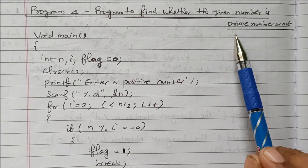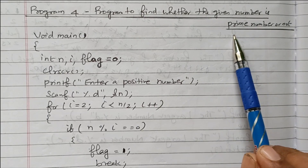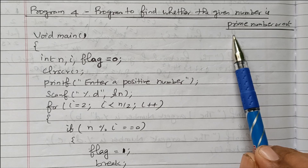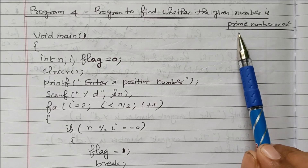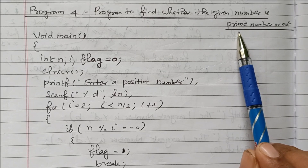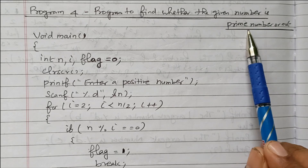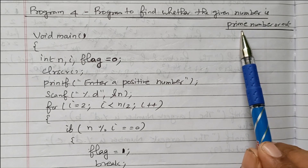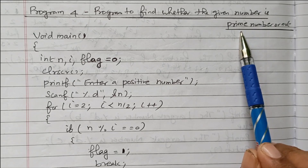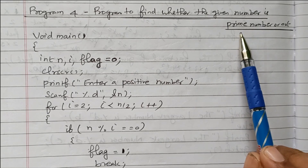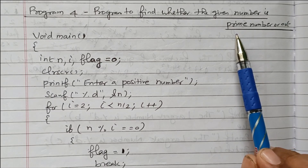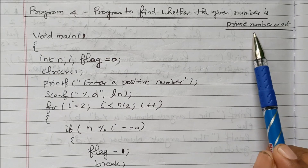What is meant by a prime number? A number that is not divided by any other number — only by itself — is called a prime number. If you take one number and it is divided only by that number itself, that is called a prime number.